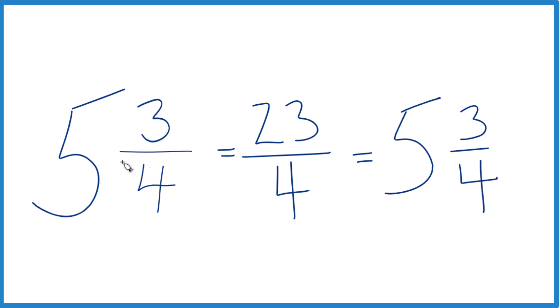That's what we started with, so we know we did it correctly. This is Dr. B writing the improper fraction for the mixed number 5 and 3 fourths. The answer is 23 fourths. Thanks for watching.